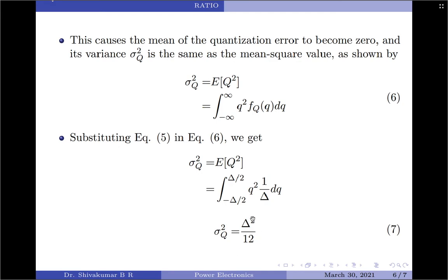From equation 7, we note that the variance of the quantization noise, sigma q squared, grows as the square of the step size. This is a very important deduction. We have now found the quantization noise part of the signal to noise ratio, so let us continue to find the variance of the baseband signal in order to determine the signal to noise ratio.